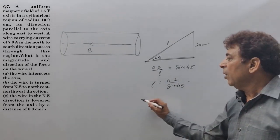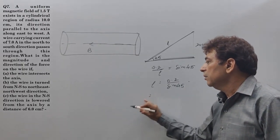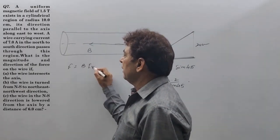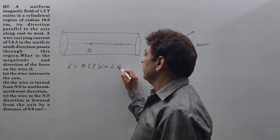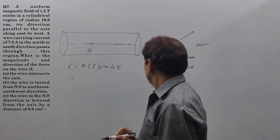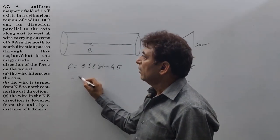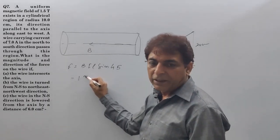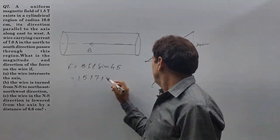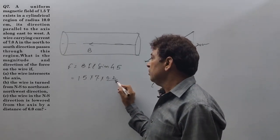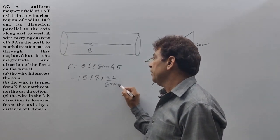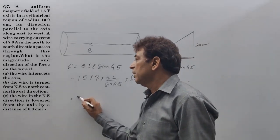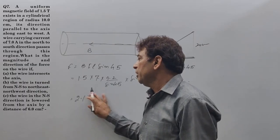Now magnetic field and force is given by BIL sin 45. How much is the angle? 45 degrees. How much is the magnetic field? 1.5 tesla. Current is 7 ampere. Length is 0.2 by sin 45 into sin 45. The value still comes out to be the same, 2.1 newton.